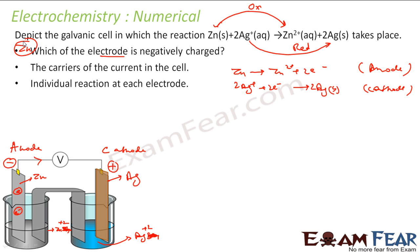The next part asks about the carrier of current in the cell. Electrons carry the current outside the cell. But inside the cell, it is the ions that carry the current. For example, with zinc sulfate on one side and silver nitrate on the other, Zn2+ ions move from left to right through the solution.